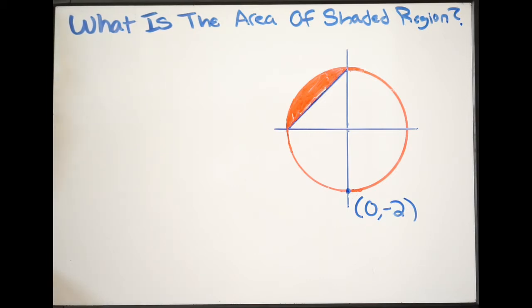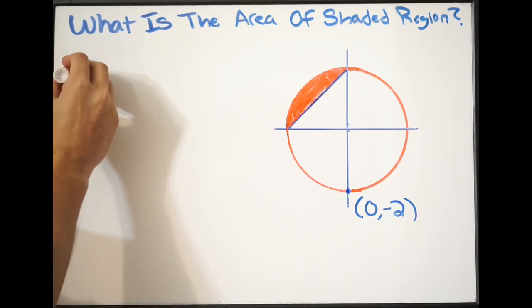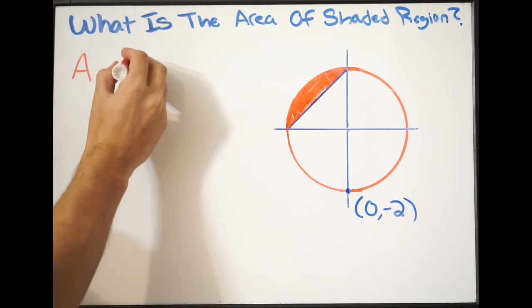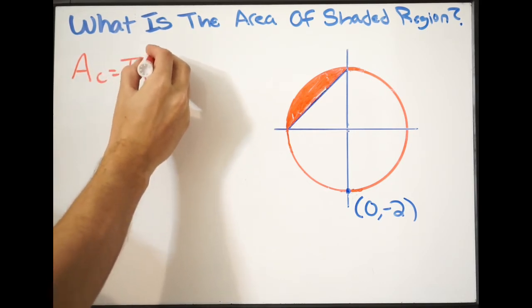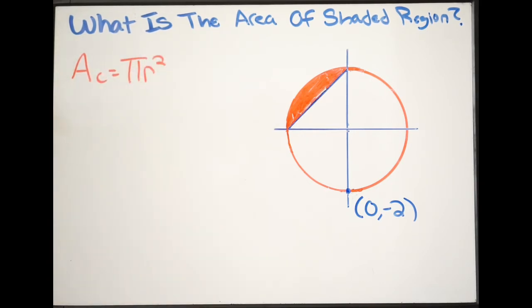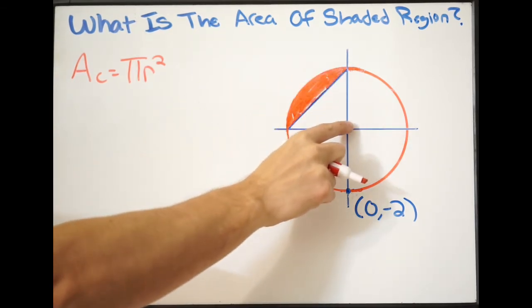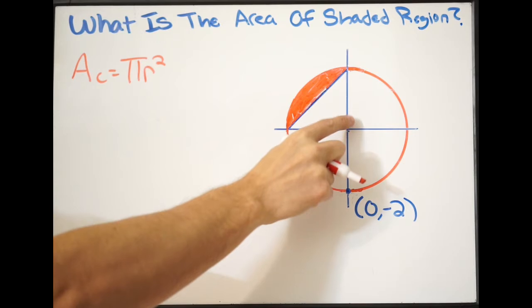What we're going to do here is we're simply just going to get the area of this circle. So the area of the circle is going to be pi radius squared. Now, I don't want the entire area of the circle. I just want this one section right here, or this one quadrant.